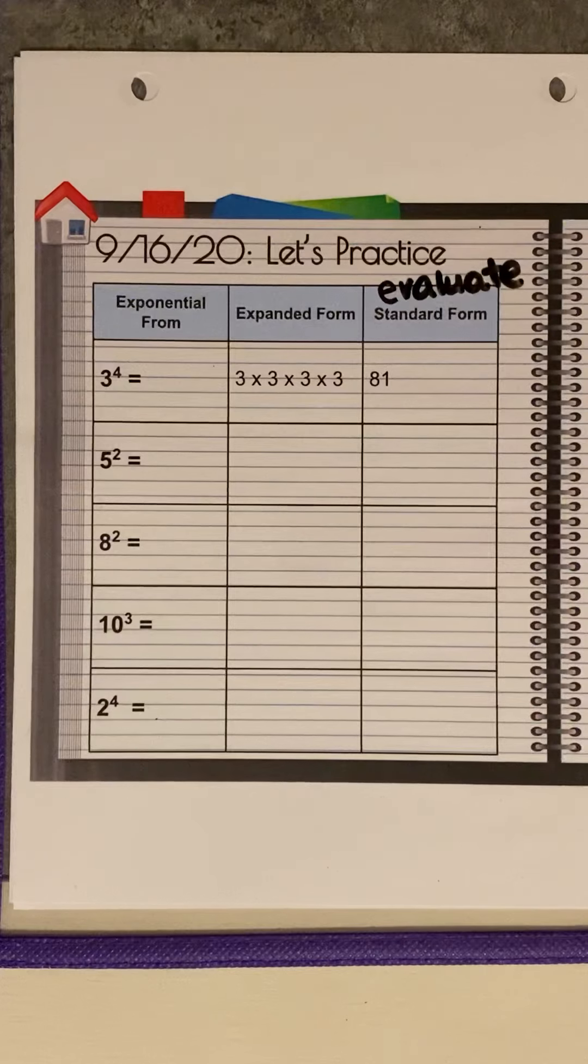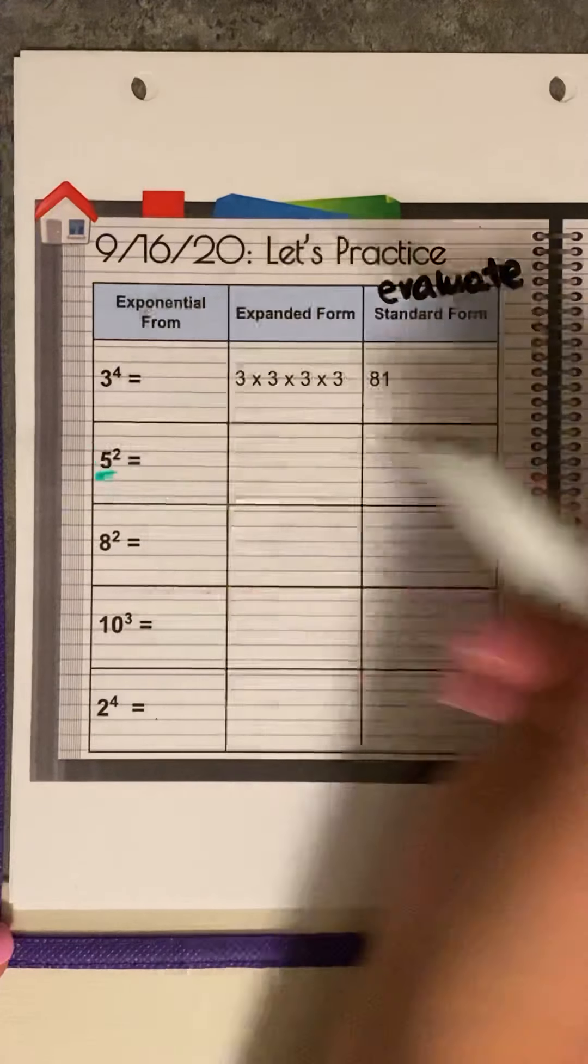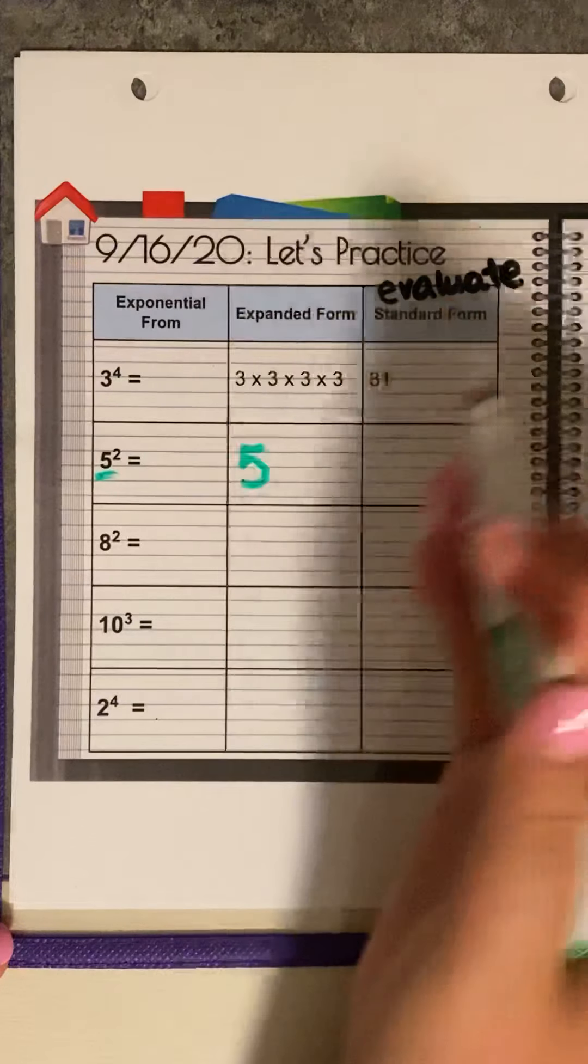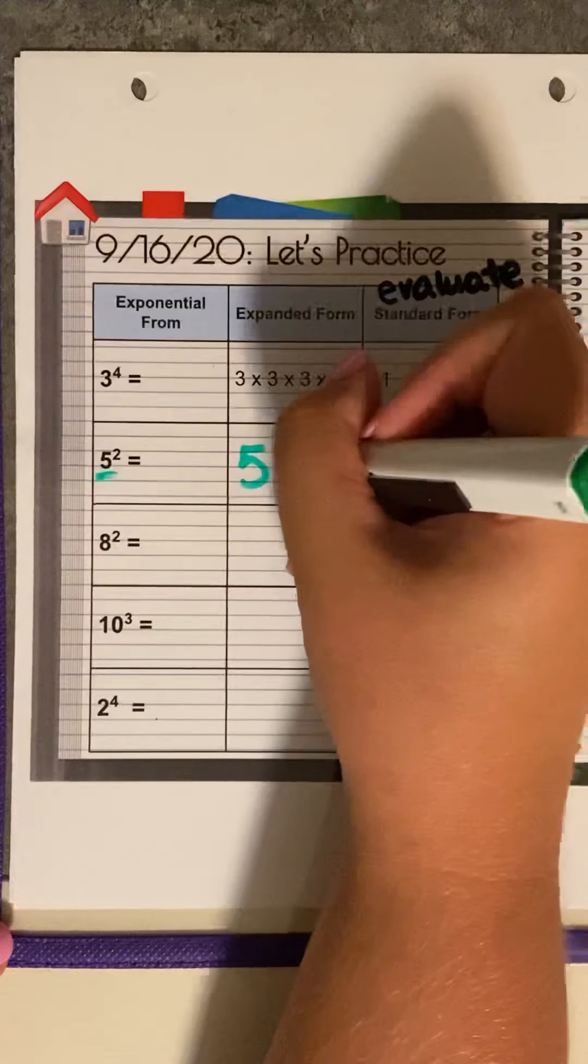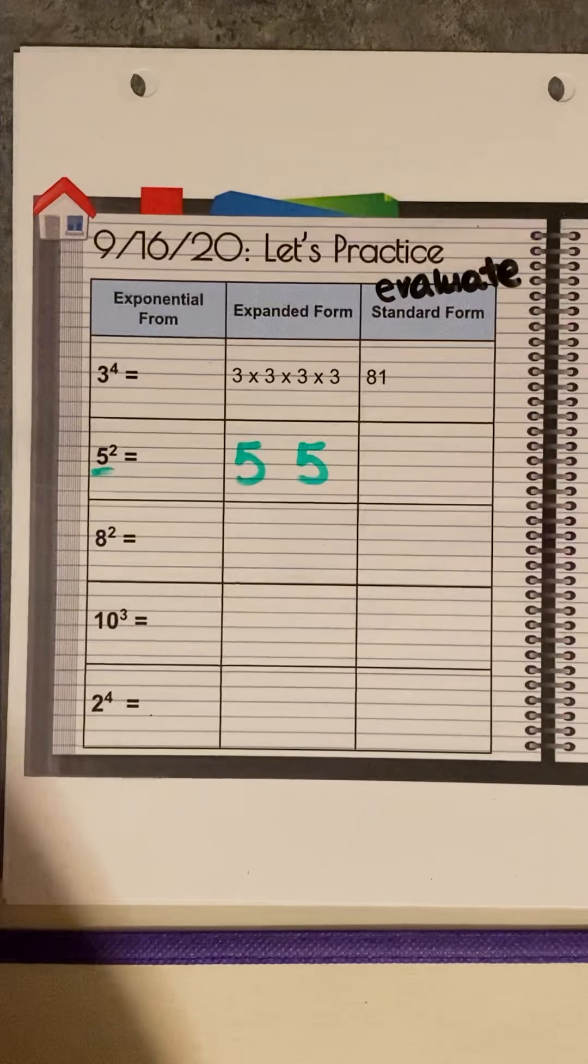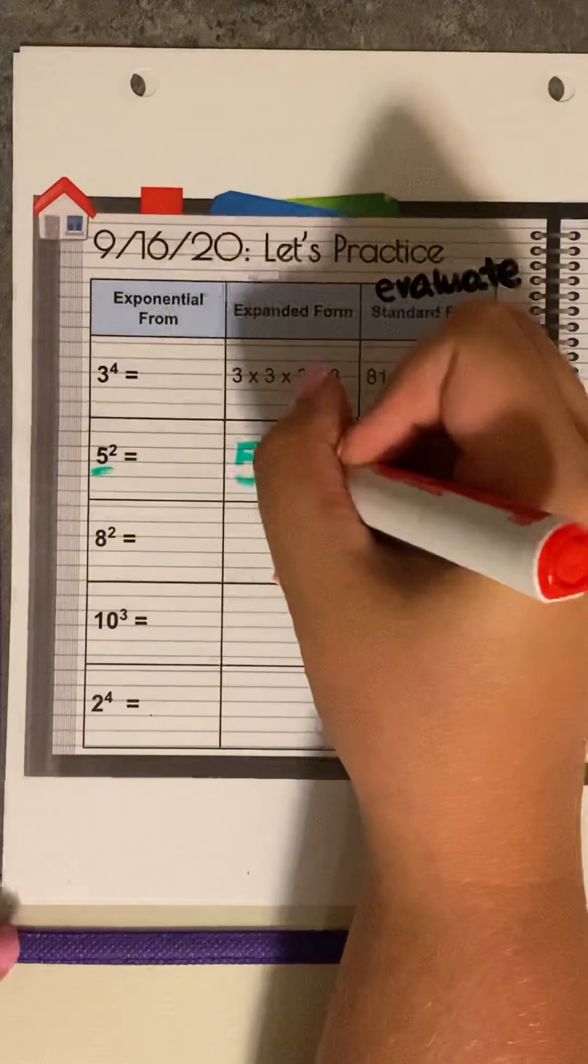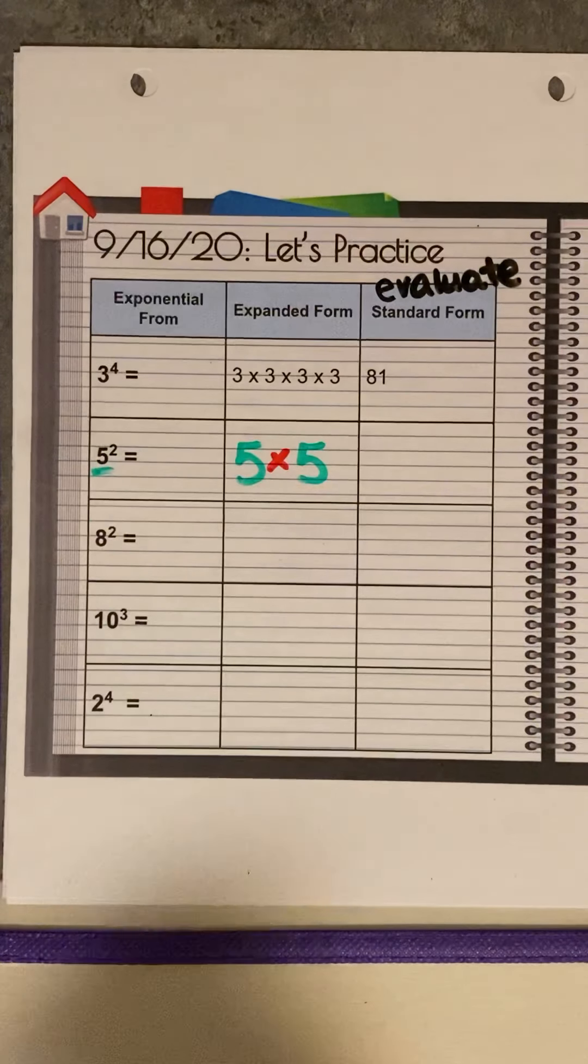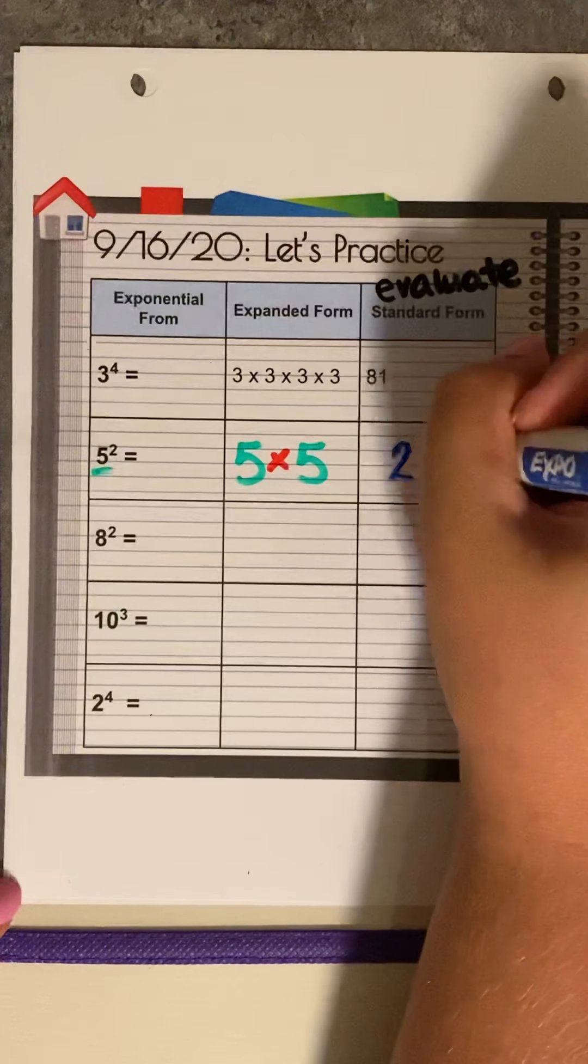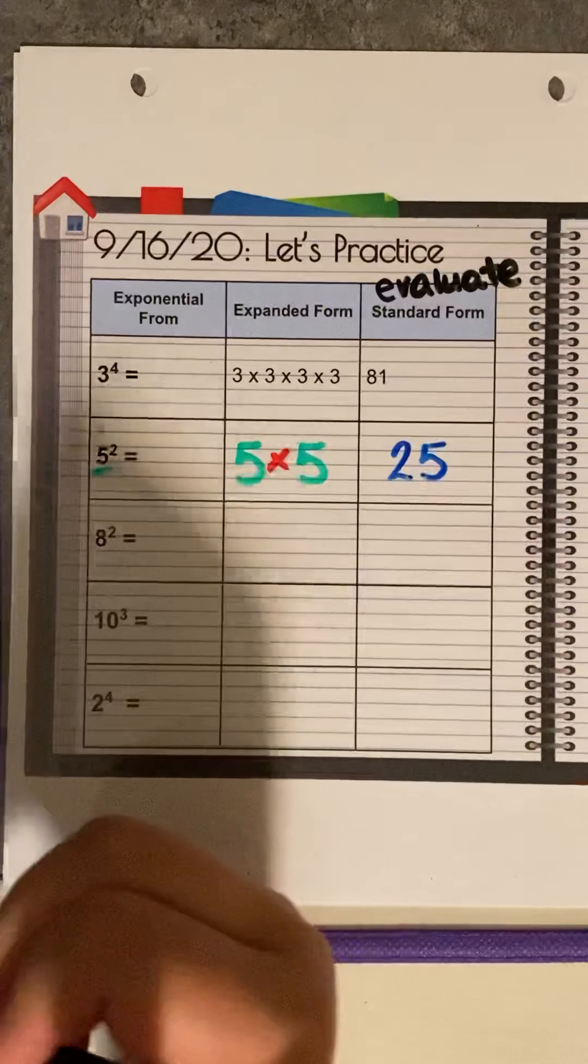Five squared. What's our base? Our base is five. How many times am I going to see that five? The exponent is two. So I'm going to see it two times. So five times five. What do we do with these numbers? Multiply. What is five times five? It's 25.